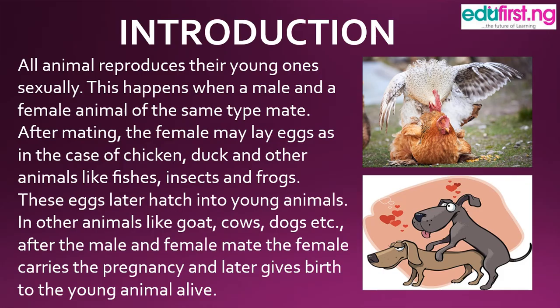Introduction. All animals reproduce their younger ones sexually. This happens when a male and a female animal of the same type mate together. Now look at the pictures at the right hand of this slide. We will see two chickens, a male and a female, and two dogs, a male and a female, mating each other. In this process, they want to reproduce a younger one of their version — the chicken wants to reproduce a younger chicken while the dogs want to reproduce a younger dog.